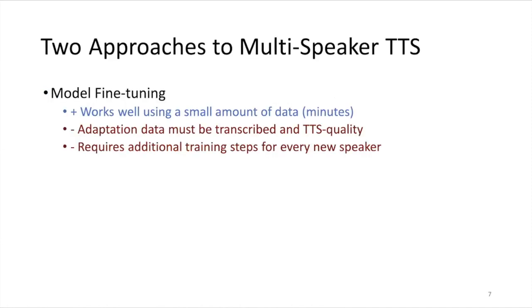There are two types of approaches to multi-speaker TTS in the end-to-end setting. The first is model fine-tuning, where you take a small amount of data for your target speaker — maybe just a few minutes — and use that data to retrain the model a little bit. This works well even with a small amount of data, but the data has to be TTS quality: high quality recording conditions with transcripts. And of course you have to retrain the model additionally for every new speaker.